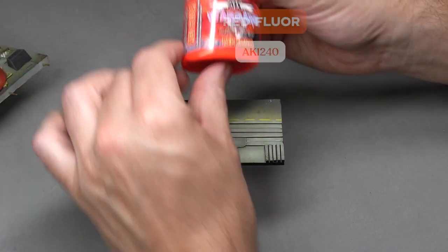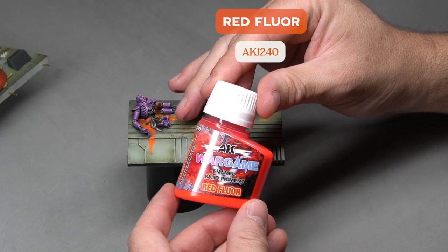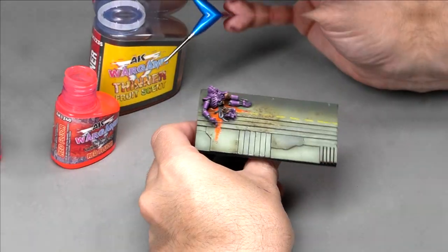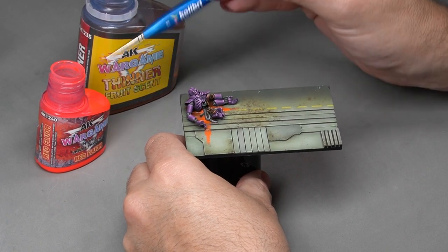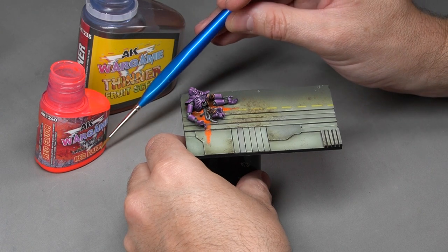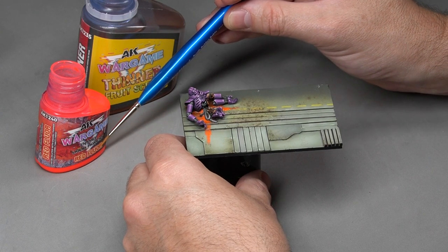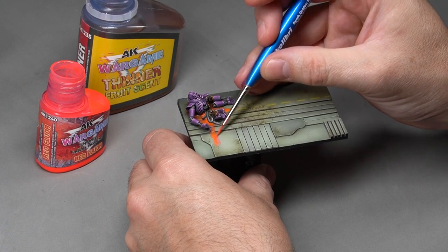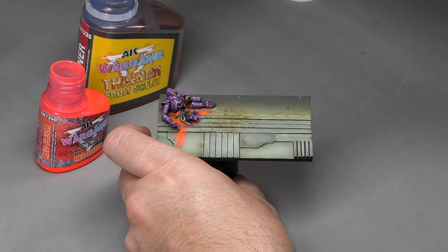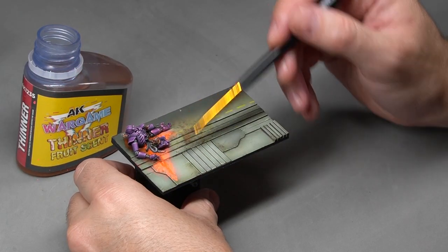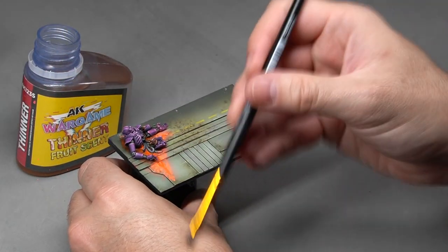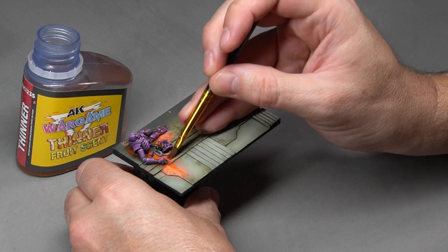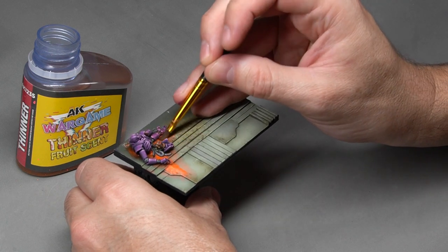Next, we're going to apply more red pigment around the blood to simulate dried blood on the floor. Pigments are very easy to use. After stirring the product, if we load the brush from the bottom of the bottle, it will be more pigmented, but if we load it from the top, it will have less pigment. To integrate the pigment and remove what we don't want, we wet the brush in the specific thinner for pigments and blend it in the surrounding areas and remove what we don't want.